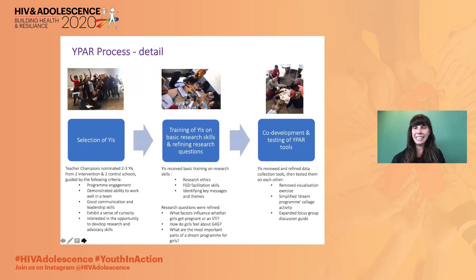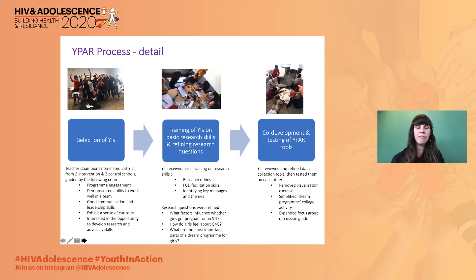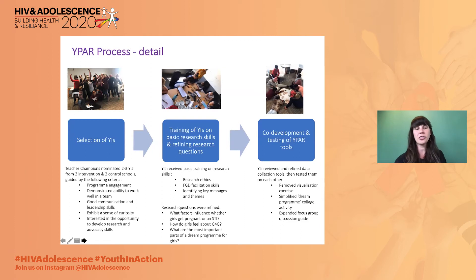In a little bit more detail, the first phase was selecting youth investigators. Teachers from intervention and control schools selected two to three investigators from each school, guided by a few criteria: engagement in the program, good communication and leadership skills, curiosity, and interest in building further skills.